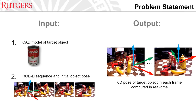Our problem statement is as follows. Given the input of a CAD model of the target object, an RGB-D sequence, and the initial object pose, we aim to estimate the 6D-poses of the target object in each frame computed in real-time.